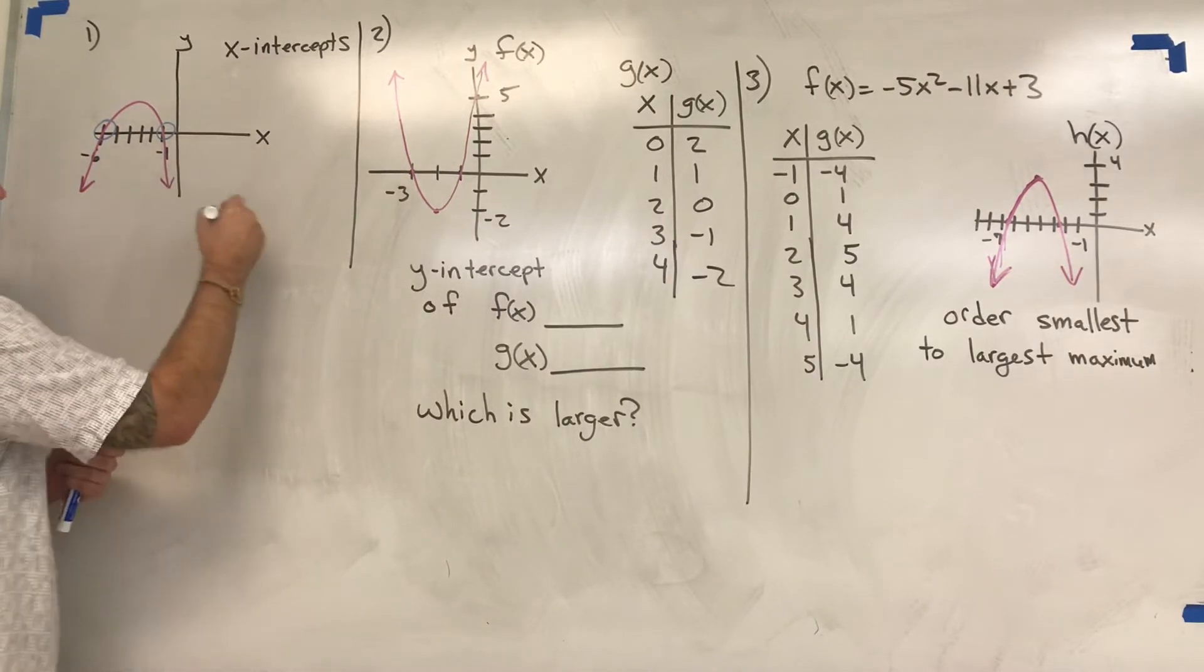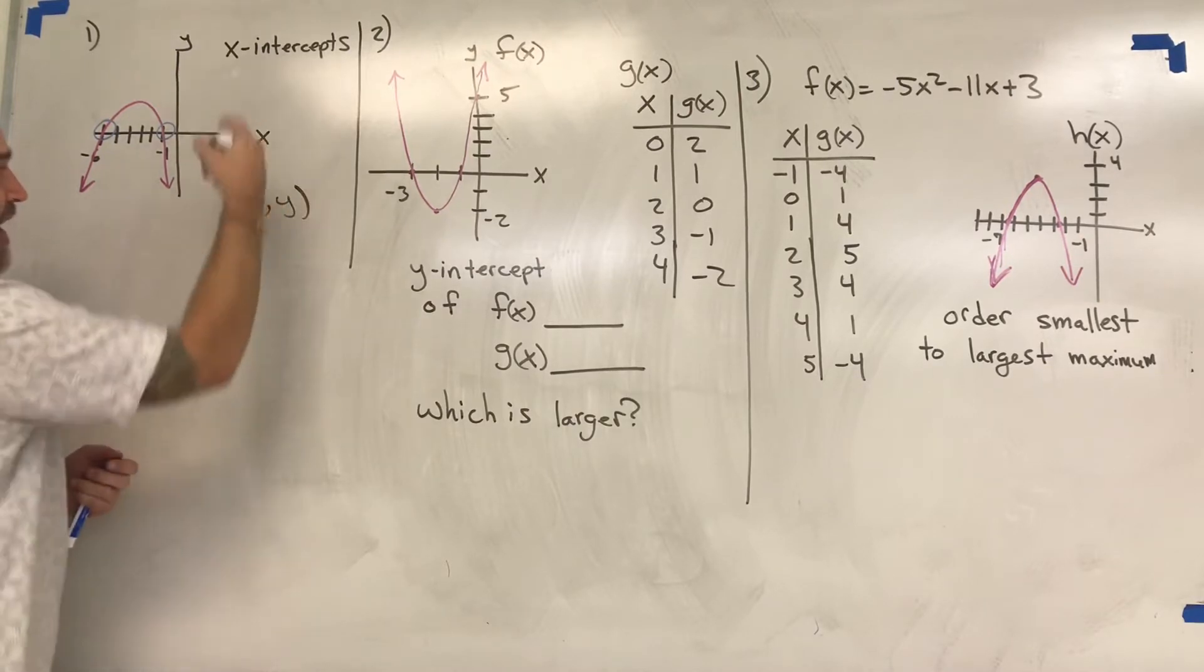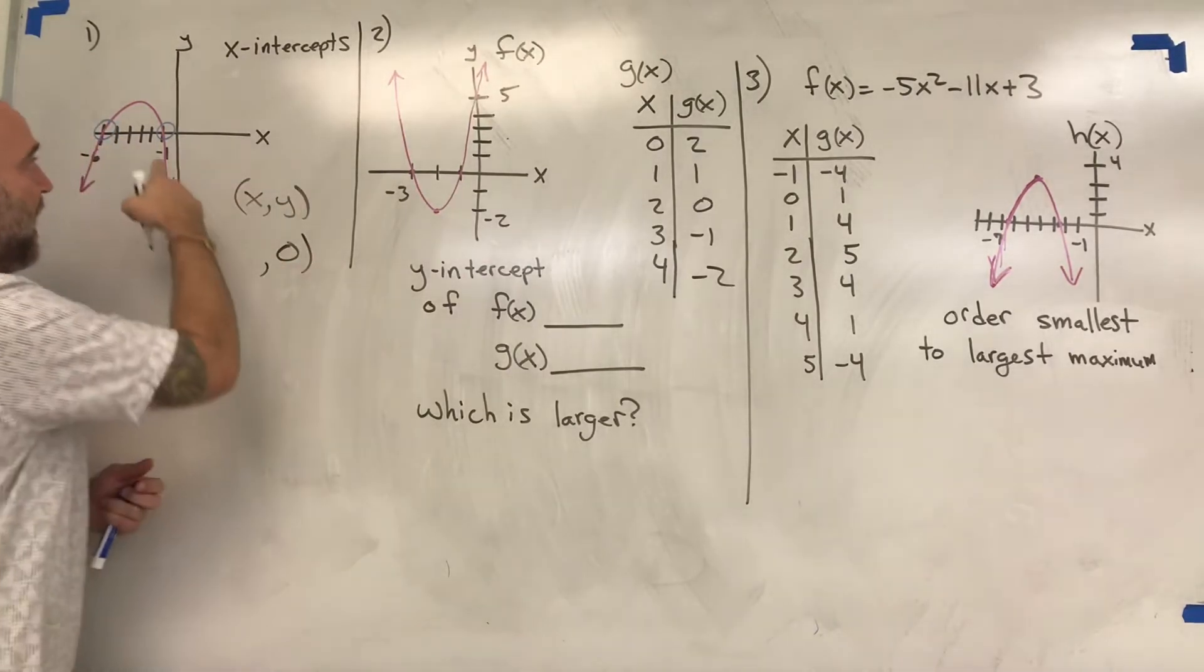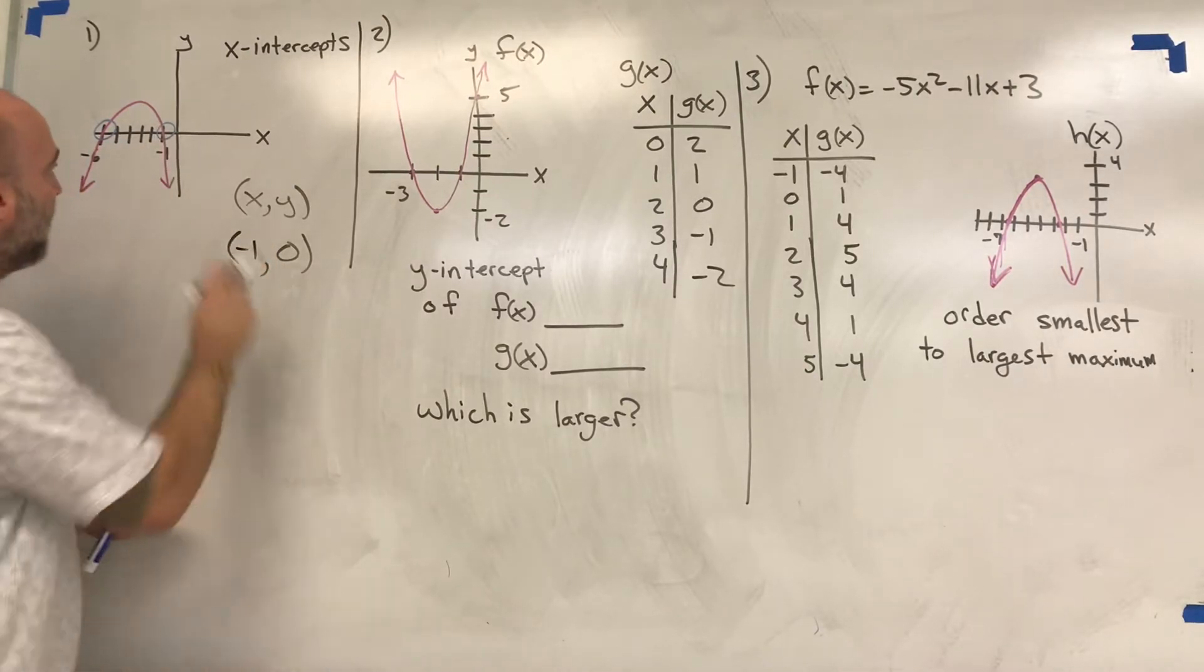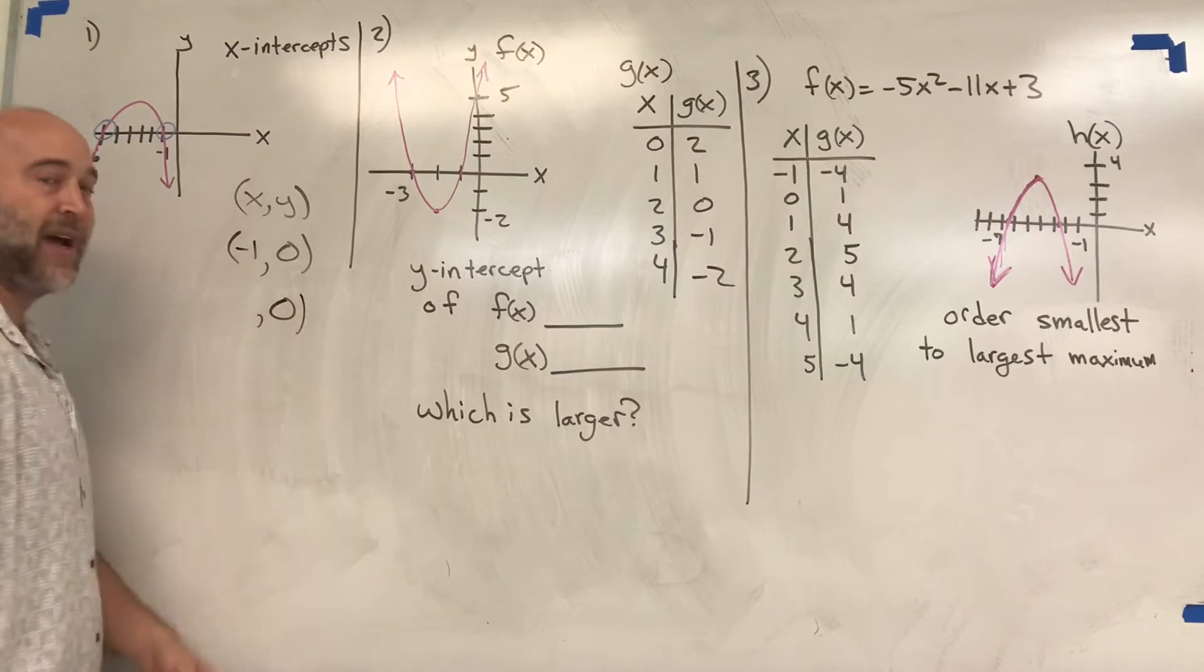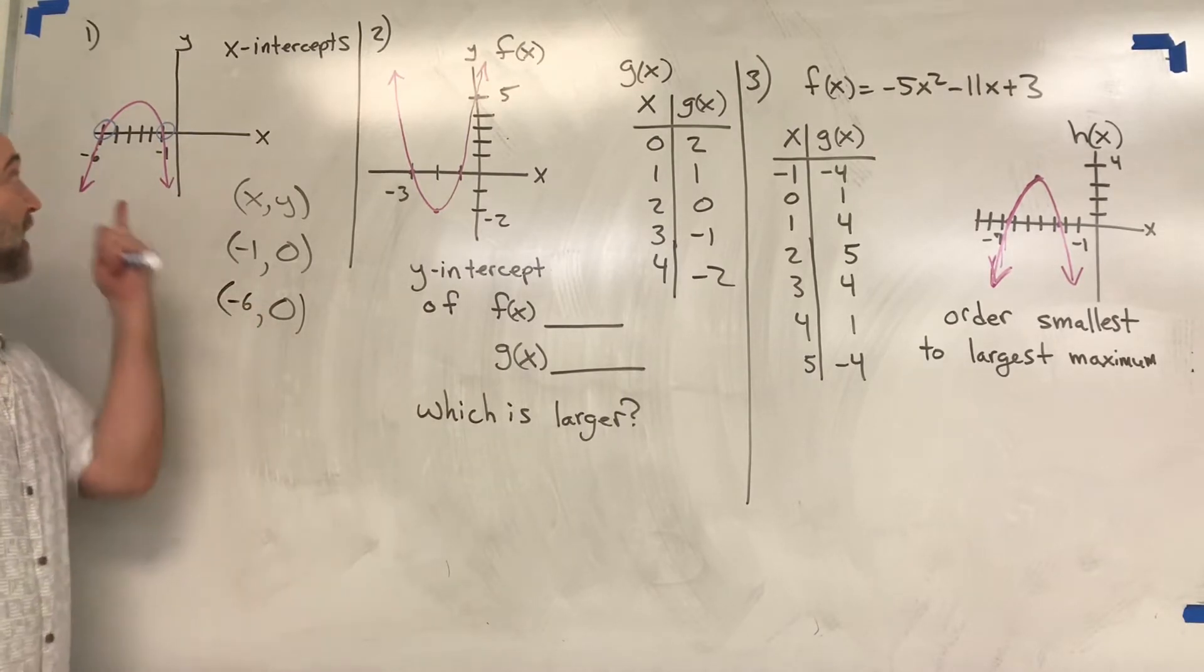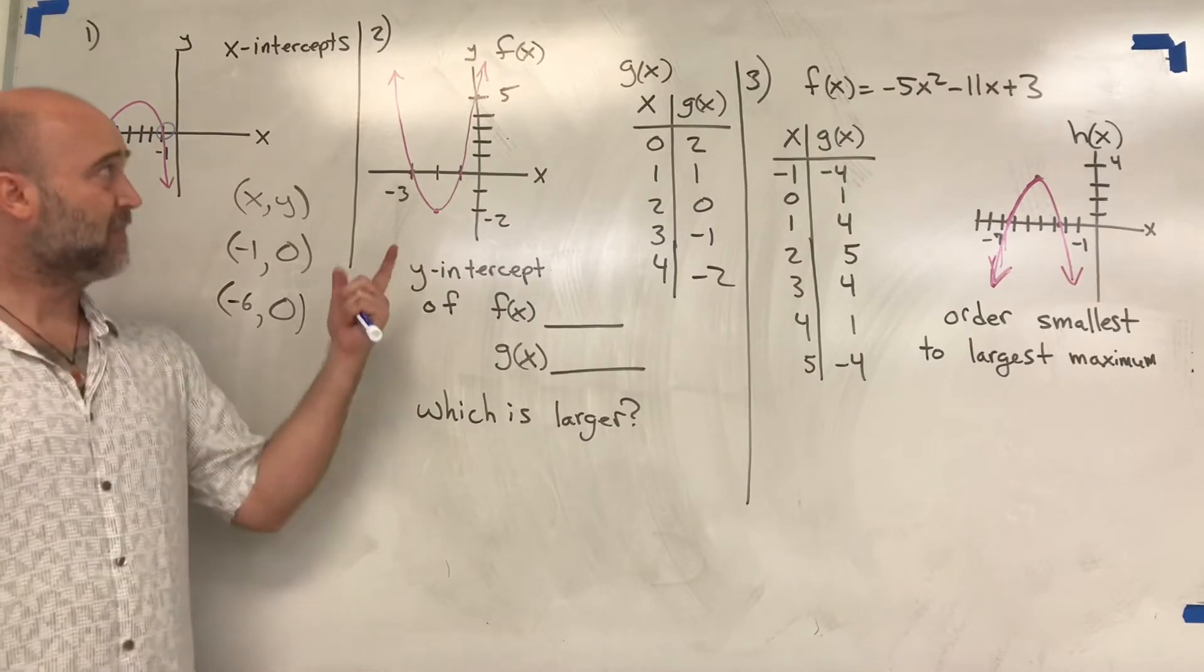The x-intercept is written as (x, y), and we know the other coordinate has to be zero. So an x-intercept means y equals zero. It looks like we have an intercept at (-1, 0), and we have another intercept at (-6, 0) where it hits the x-axis.